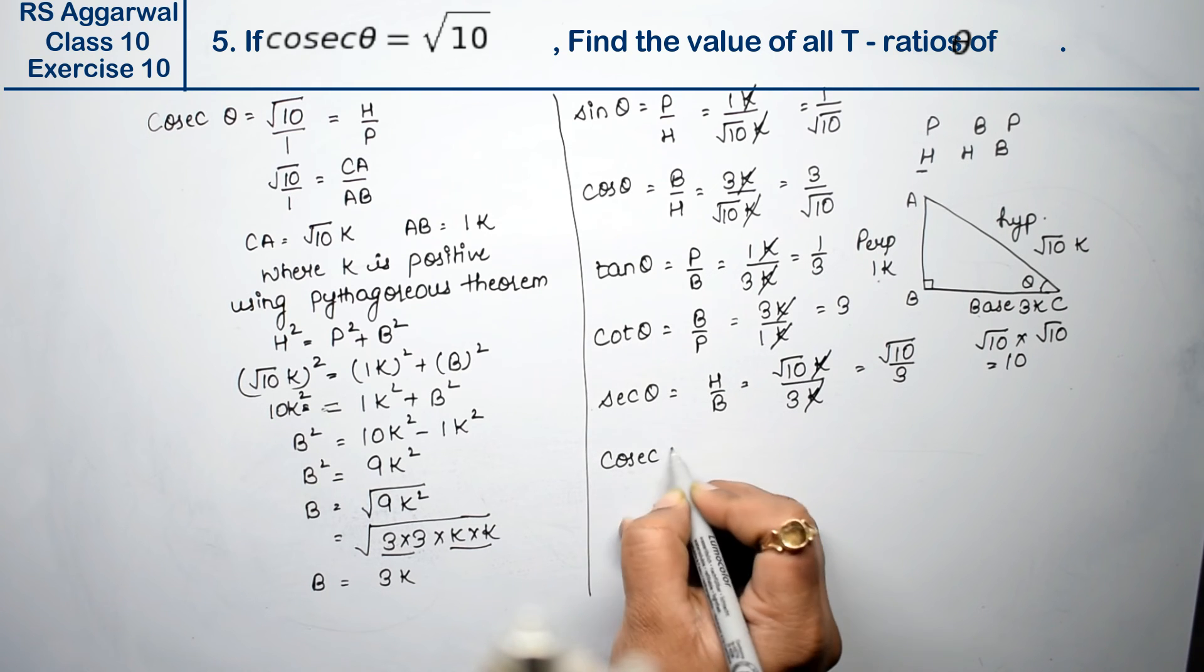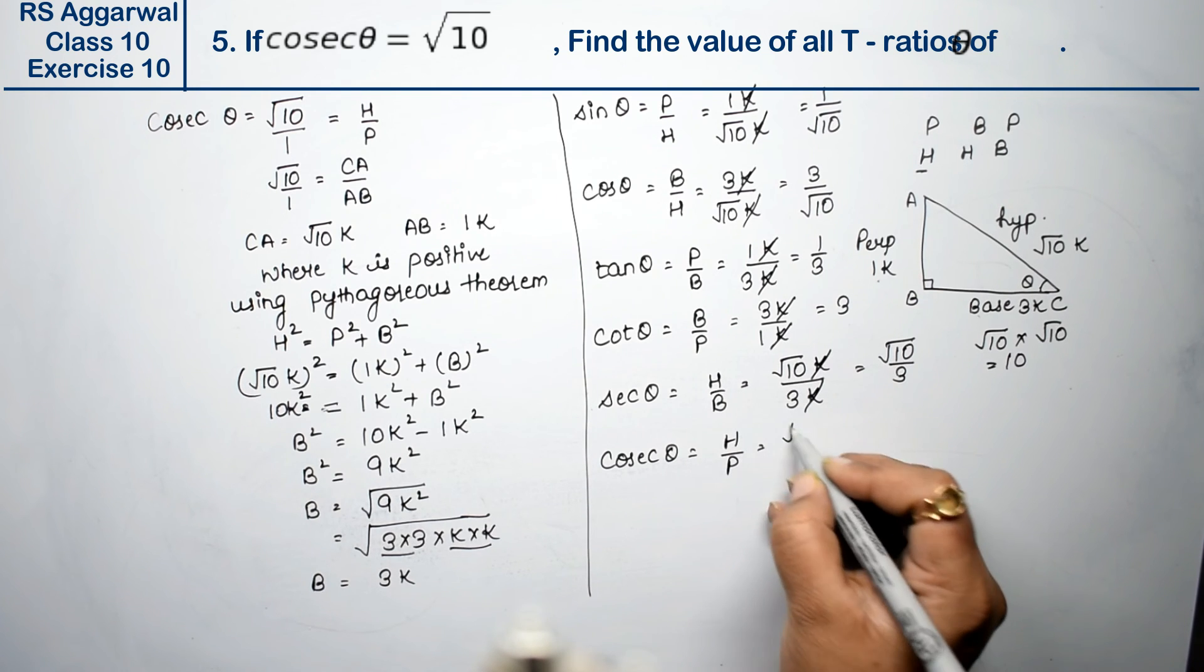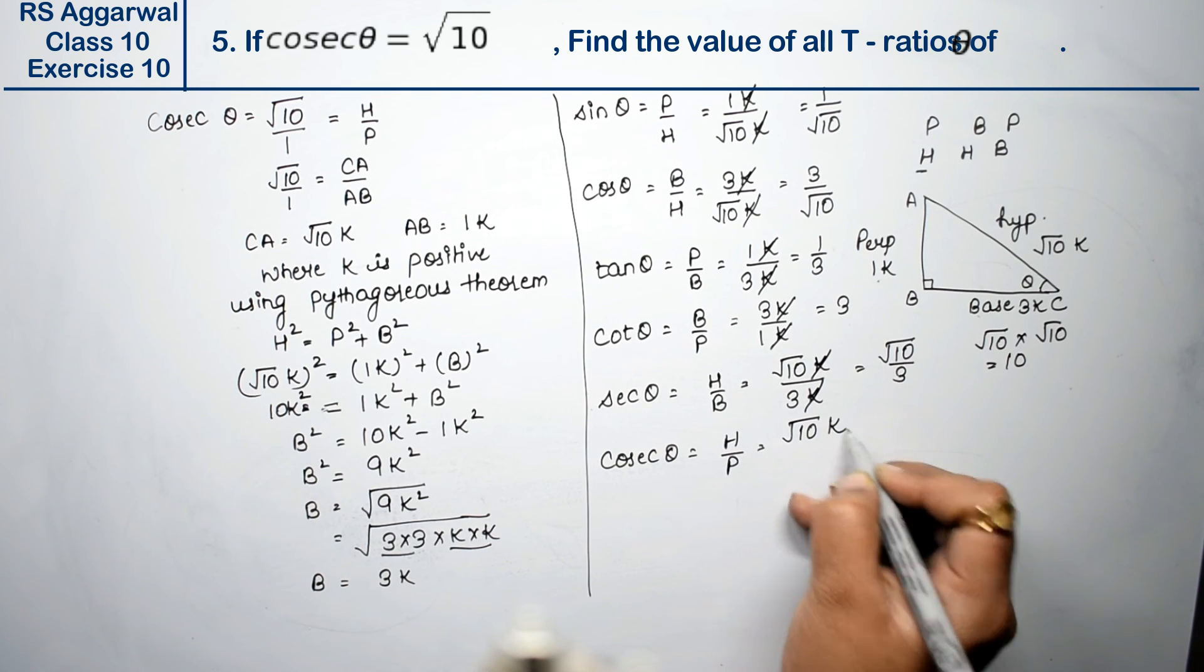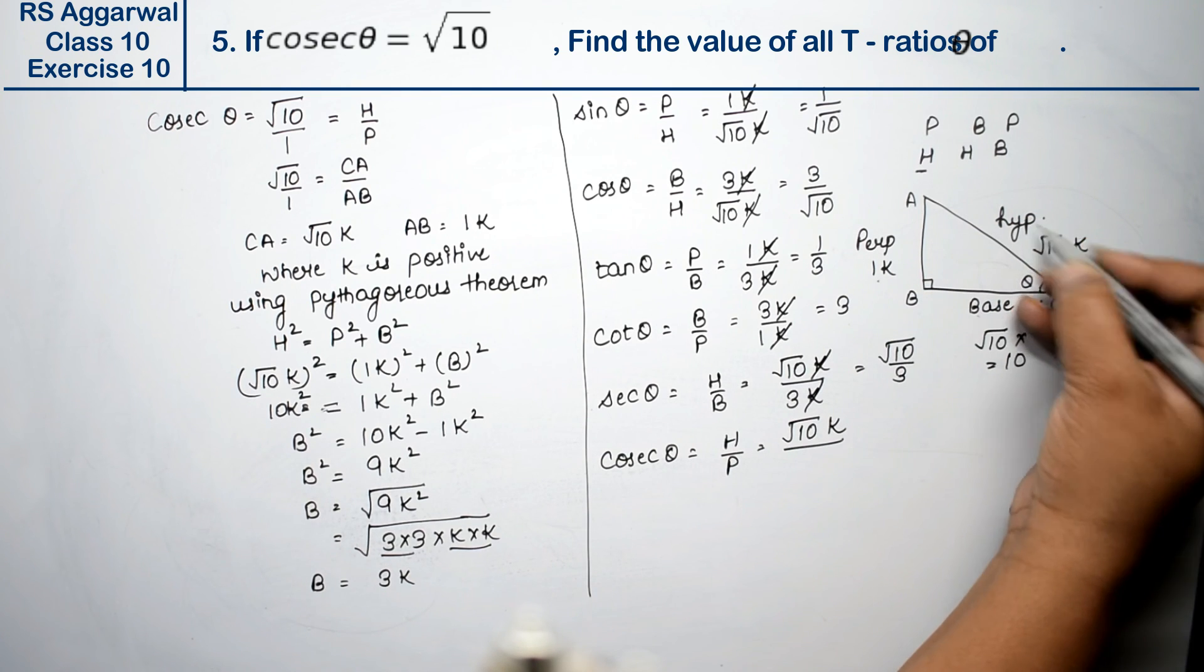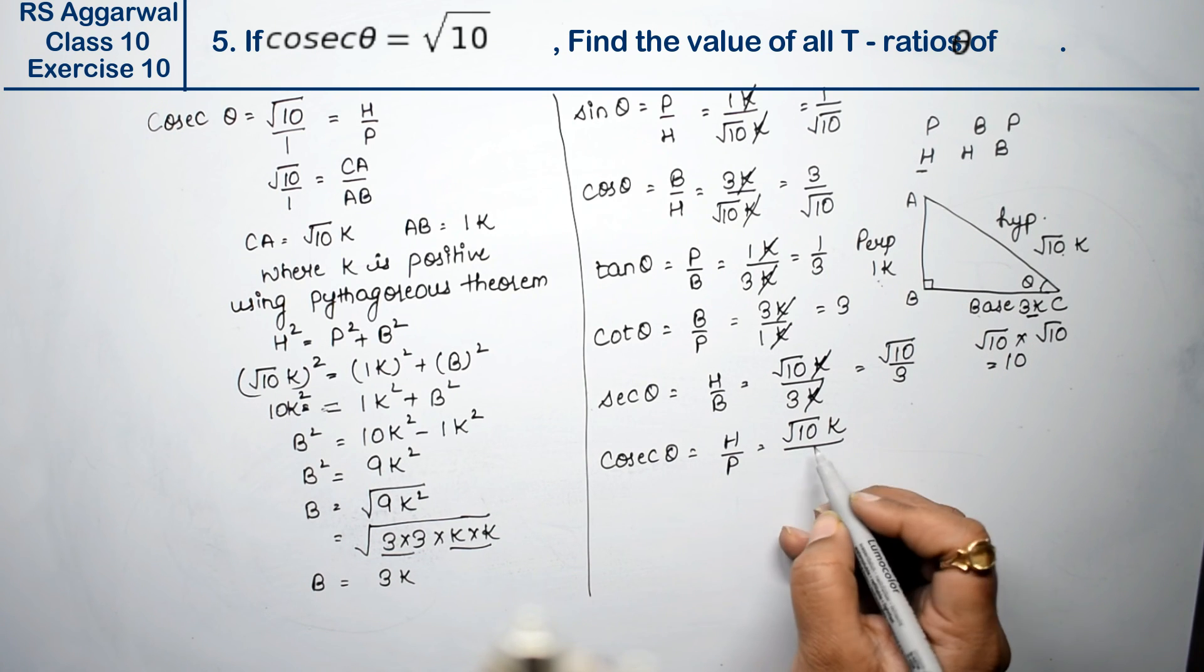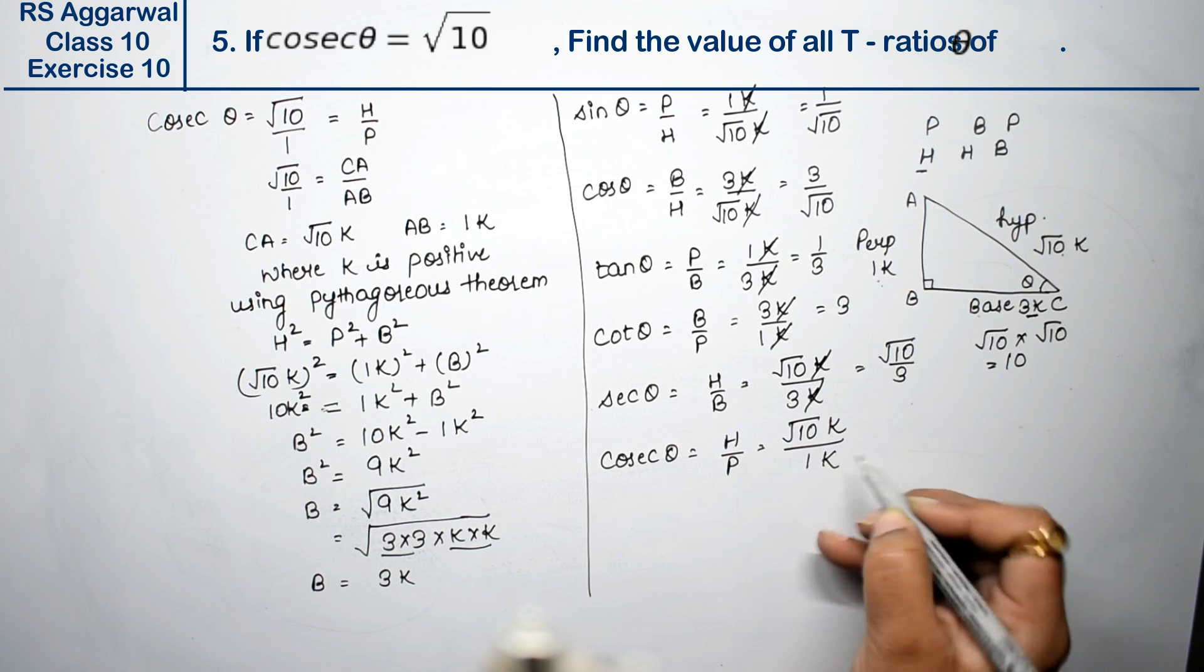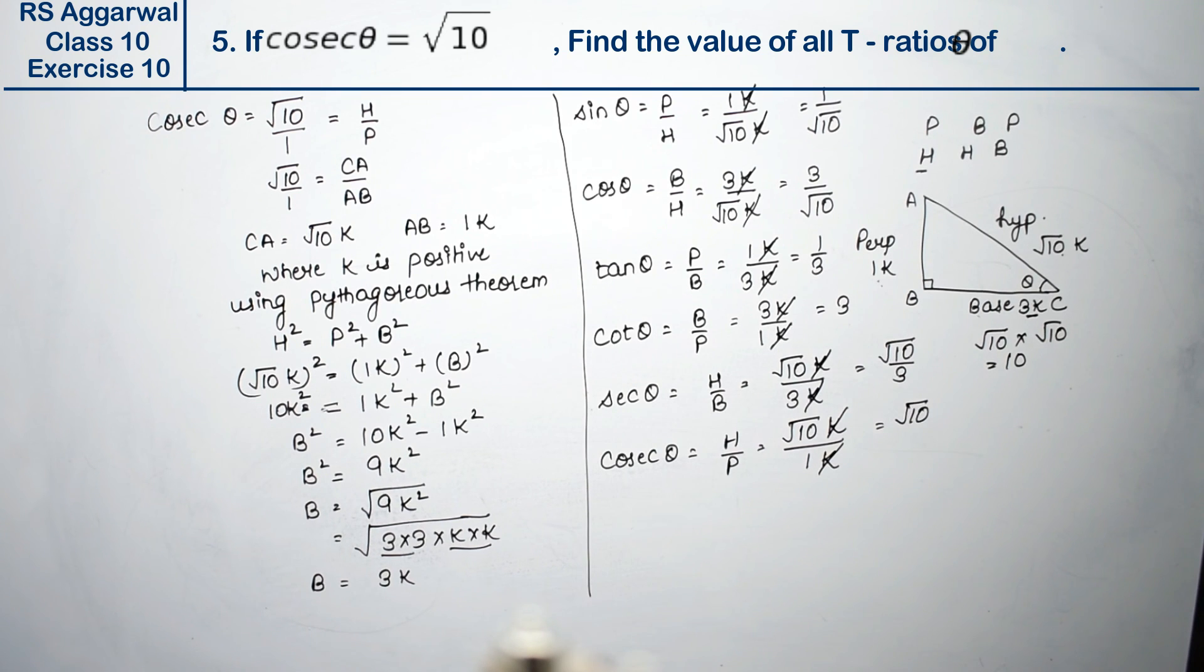Last one is cosec theta. We already have it given, no need to take it out. But still we'll find it. Hypotenuse is root 10k, perpendicular is 1k. K and k cancel. So the answer is root 10.